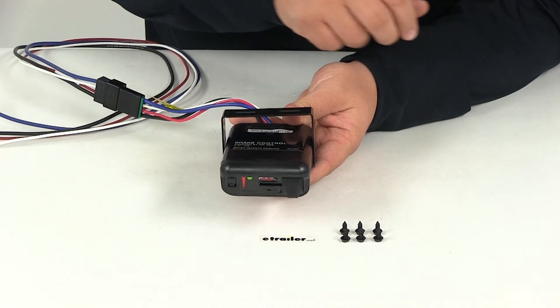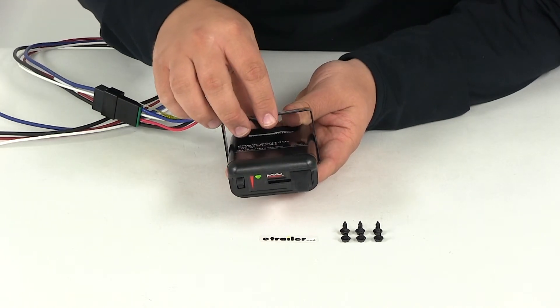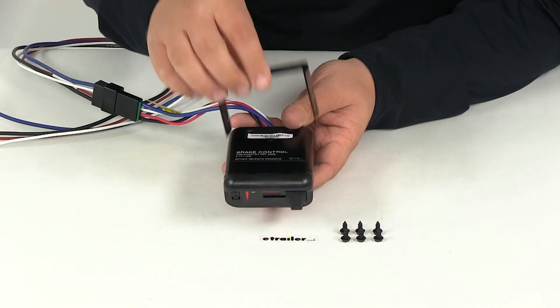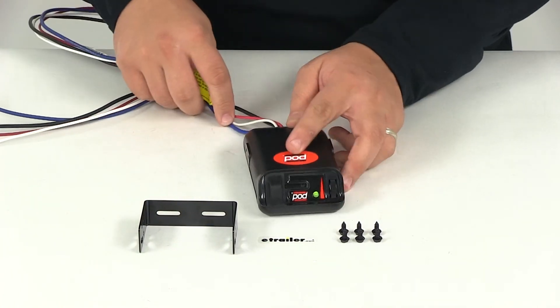So it's got the bracket, all the screws needed. All you do is screw it into the surface you want and then attach it to the brake controller, and it's fully set and ready for use.